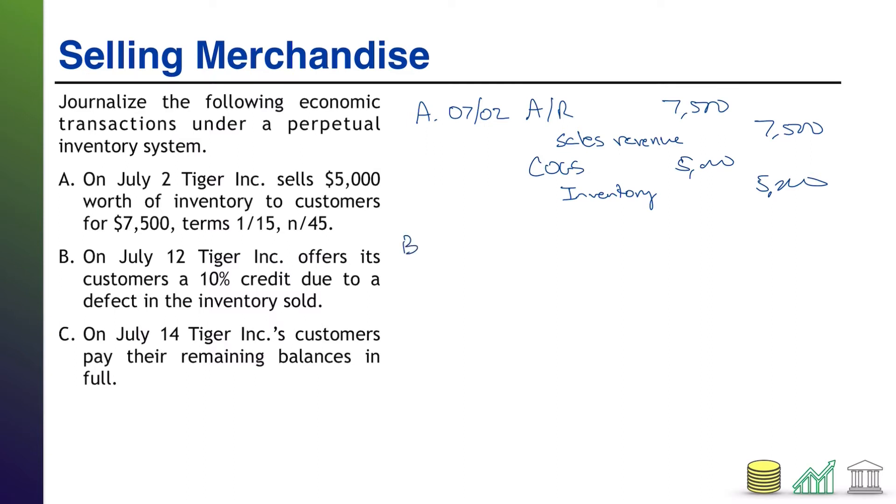B says, on July 12th, Tiger Inc. offers its customers a 10% credit due to a defect in the inventory sold. Notice it doesn't say anything about the customers returning any inventory. It's simply a, hey, we need to make good because that inventory was defective. That's something we call an allowance where we give the customer a discount because something was wrong, but we're enticing them not to return the inventory.